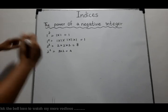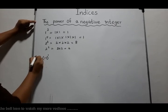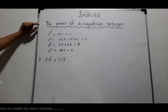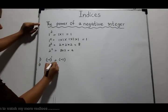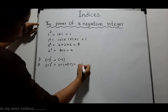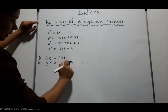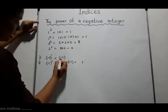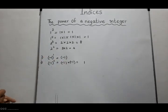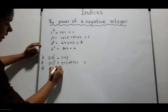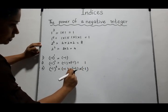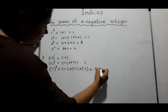Now let's see the power of a negative integer. (−1)¹ = −1, since we multiply −1 only once. (−1)² = (−1)(−1) = positive 1, because when two negative numbers are multiplied the answer is positive. (−1)³ = (−1)(−1)(−1) = (+1)(−1) = −1. (−1)⁴ = (−1)(−1)(−1)(−1) = (+1)(+1) = positive 1. Note: directed numbers are written within brackets.